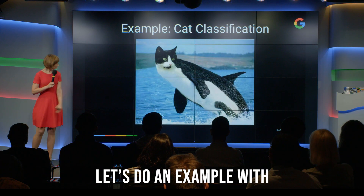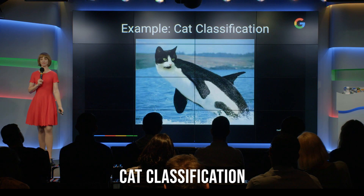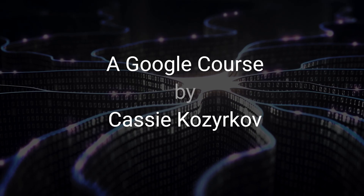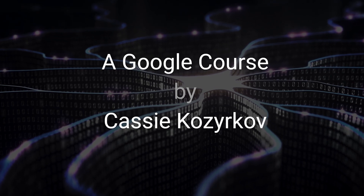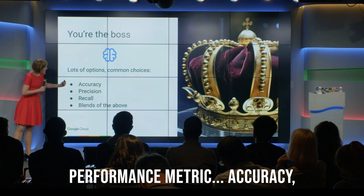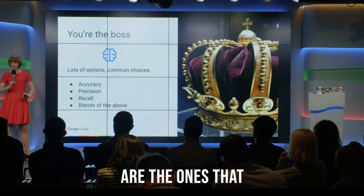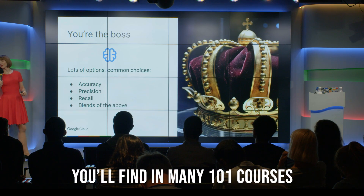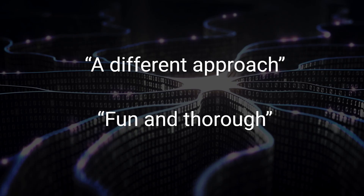Let's do an example with cat classification. Let's create that performance metric. Accuracy, precision, and recall are the ones that you'll find in many 101 courses. Let's look at them.